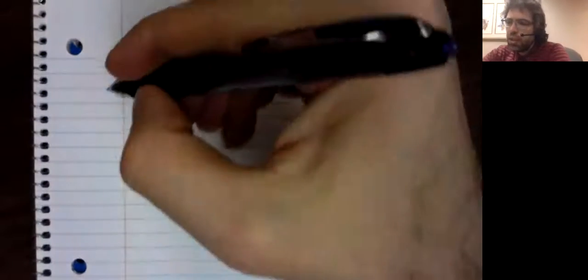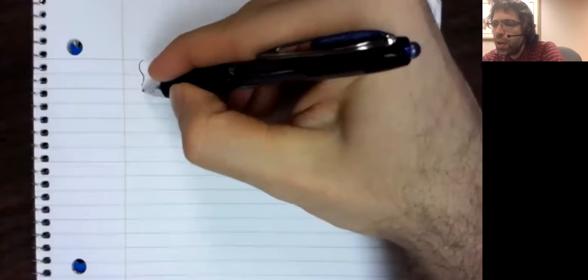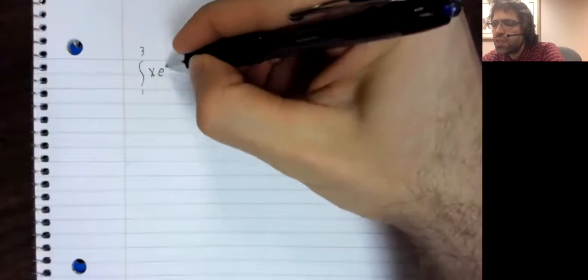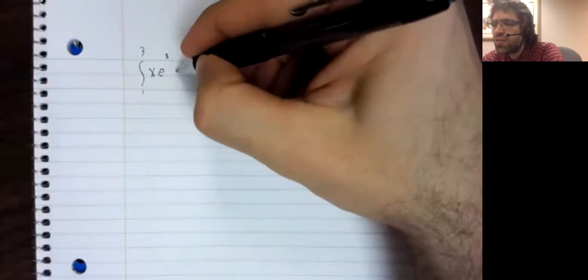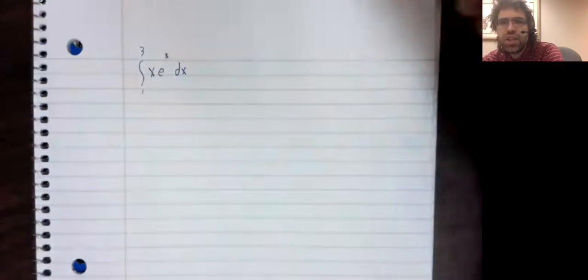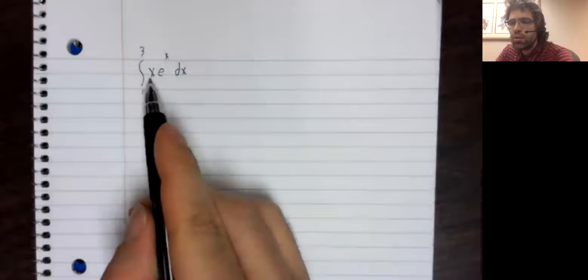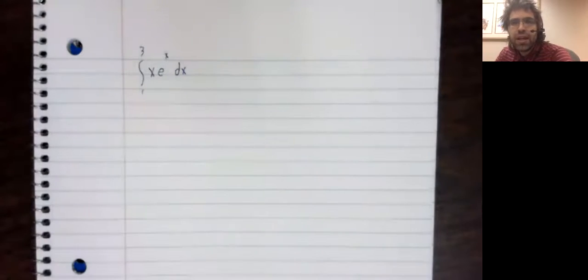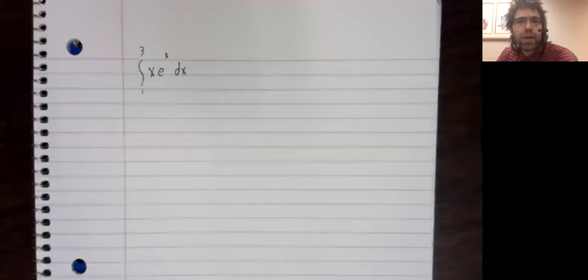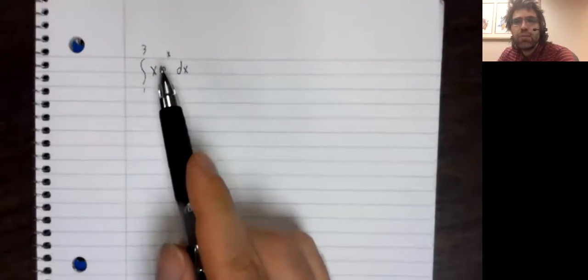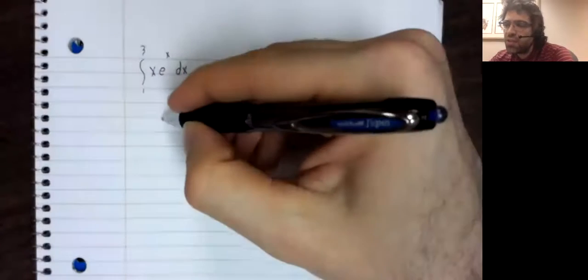So for example, the integral from one to three of x e to the x dx, this is a classic application of integration by parts. I mean, the x becomes very simple when you take its derivative, and the e to the x doesn't get any worse when you take its integral.